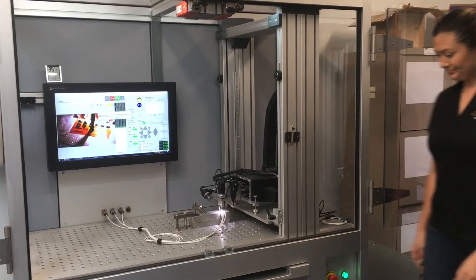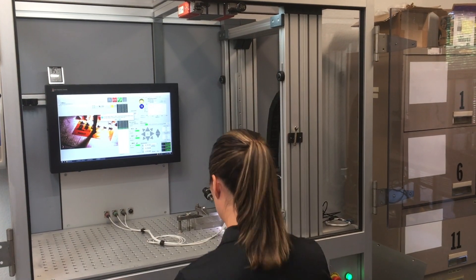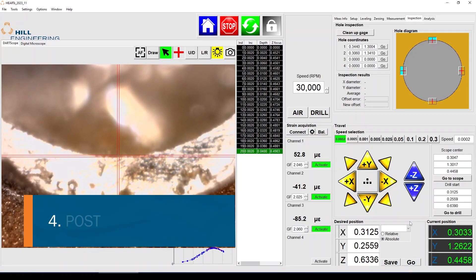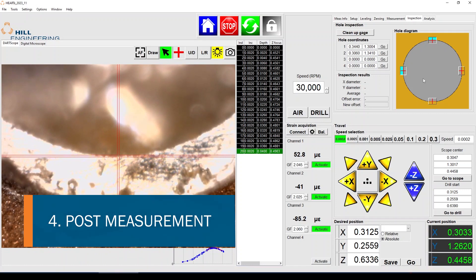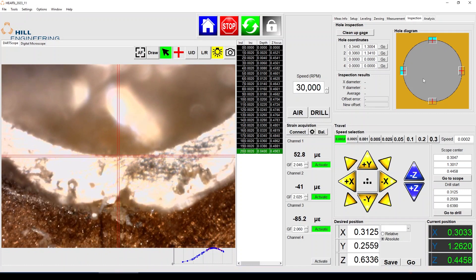Once the drilling is complete, the operator uses the software to measure the hole size and concentricity with respect to the strain gauge. This will determine whether the measurement was placed in the correct location on the gauge and if the concentricity of the drilled hole is within acceptable limits.